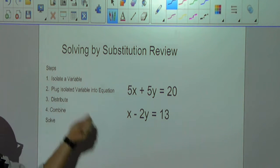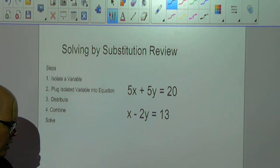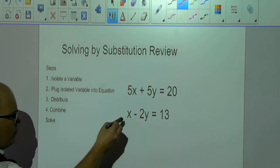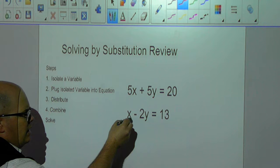Isolate the variable, plug that isolated variable into the equation, distribute, combine, and then solve. First things first, we need to isolate a variable. This x is already all by itself, so I'm going to choose to isolate this x.